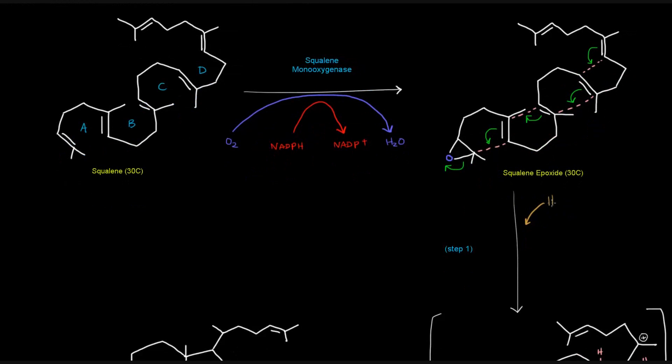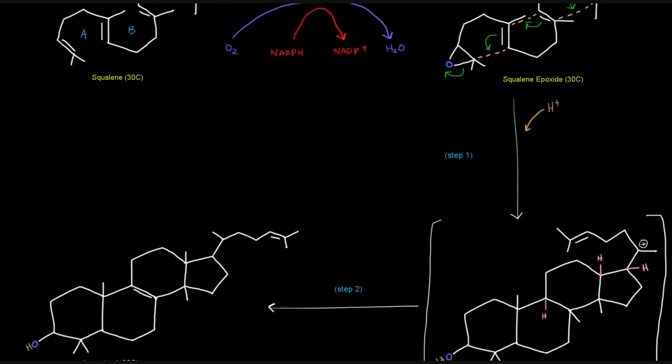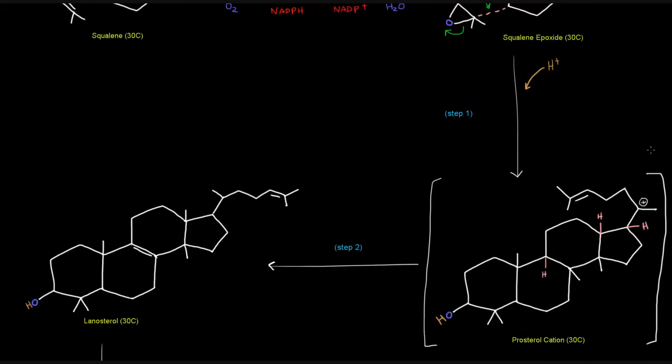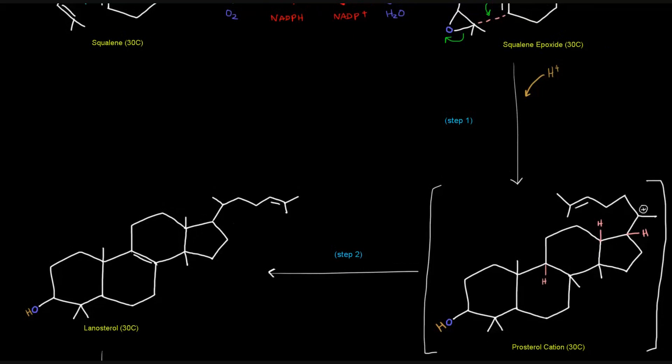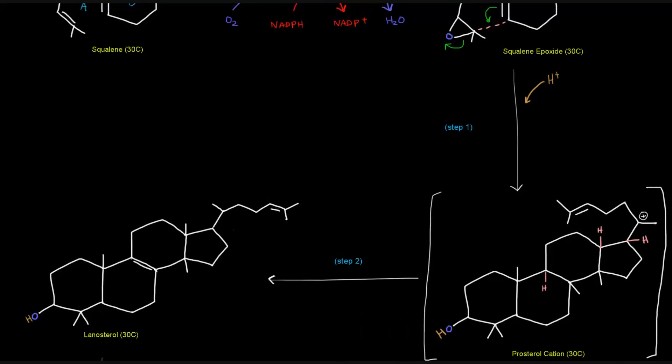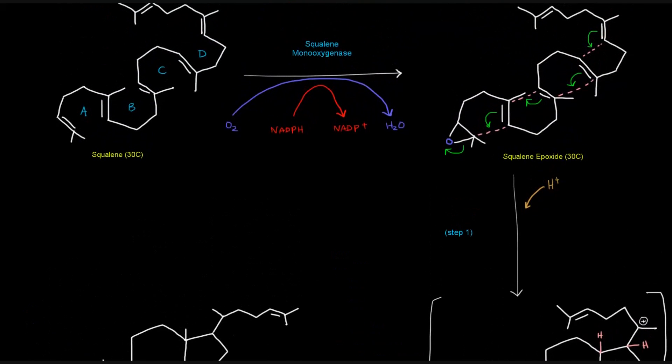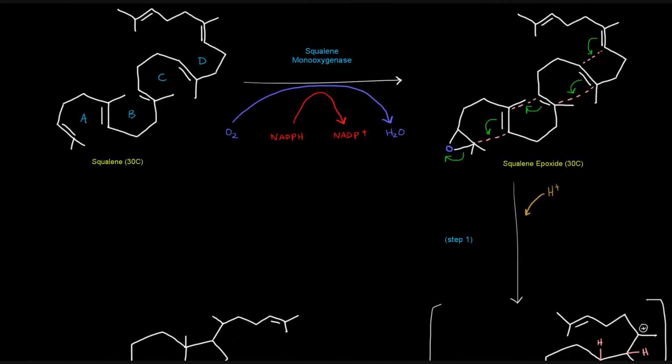They're going to pick up this proton, which will protonate the negative charge on the oxygen that results here. And we're going to get this cation here, this prosteryl cation. Now, it's put here in brackets because this thing, being a cation, is a short-lived intermediate because of this positive charge here. And that positive charge there is because once these electrons leave up top,